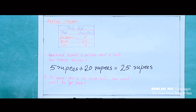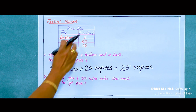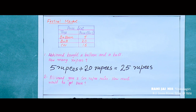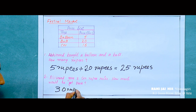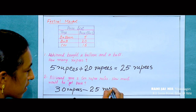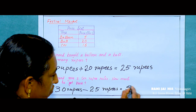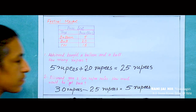Then look at the second question: Abhinant gave 3 ten-rupee notes. How much would he get back? Three 10-rupee notes means 30 rupees. So 30 minus the total cost of 25 rupees — what is the answer? Yes, 5 rupees. He would get back 5 rupees.